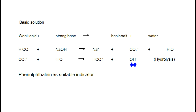When a weak acid reacts with a strong base, a basic salt and water are formed. In this case, carbonic acid (the weak acid) reacts with sodium hydroxide (the strong base) to give Na⁺ ions and CO3²⁻ ions plus water. The CO3²⁻ ions undergo hydrolysis — they react with water to form HCO3⁻ ions and OH⁻ ions. Because OH⁻ ions are present, the solution is slightly basic, and phenolphthalein is the suitable indicator.